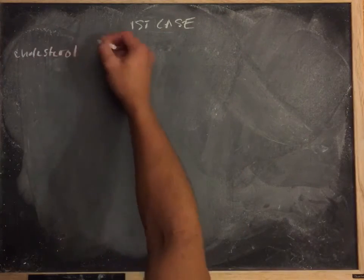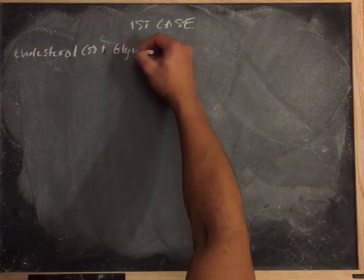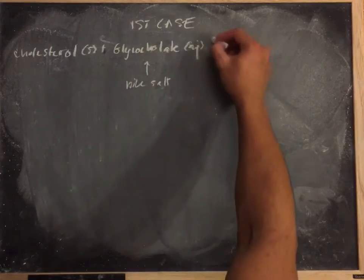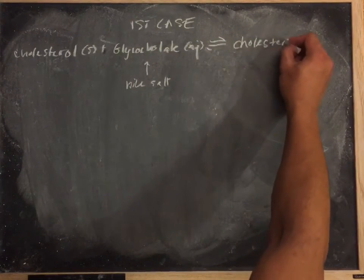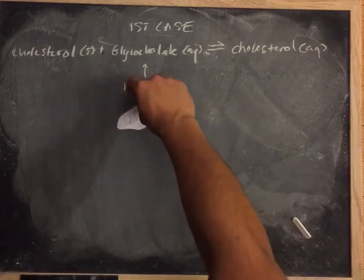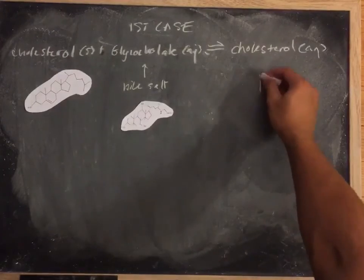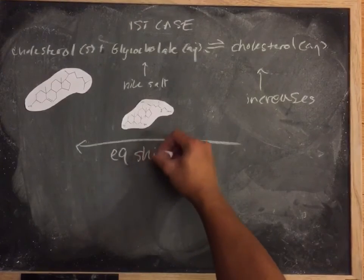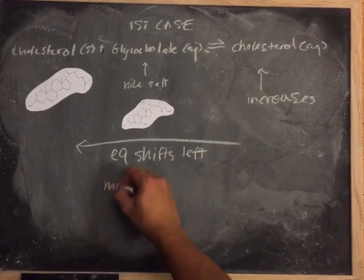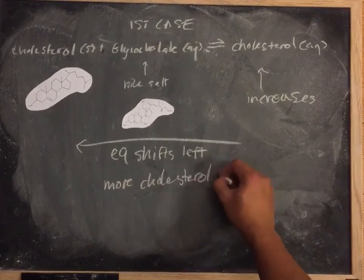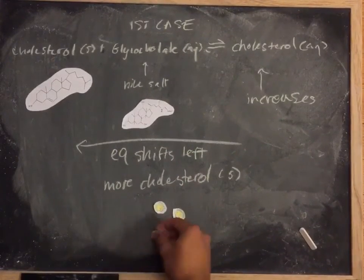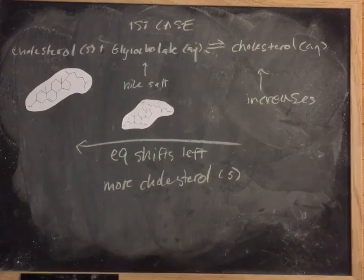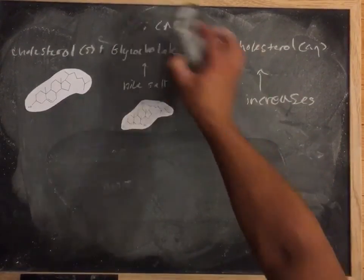So for our first case, we'll be discussing when cholesterol concentration increases in bile. Our reactants are cholesterol, which is normally insoluble in water, and glycocholate, which helps cholesterol become soluble in water. Bile of course consists of more than just cholesterol and bile salts, but we're just simplifying here for the sake of practicality. And so basically when cholesterol increases, equilibrium shifts to the left to compensate for the increase of product, and this leads to more production of solid cholesterol. Basically, cholesterol precipitates out and forms gallstones.